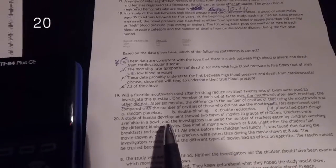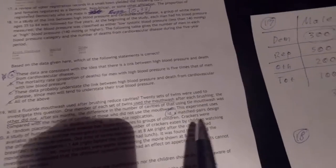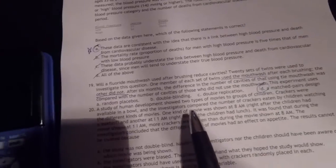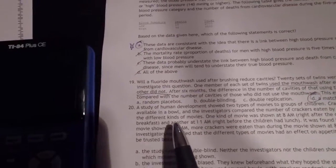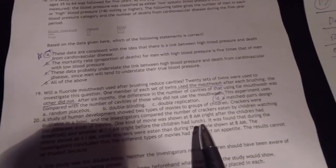A study of human development showed two types of movies to groups of children. Crackers were available in a bowl, and the investigators compared the number of crackers eaten by the children watching the different kinds of movies.